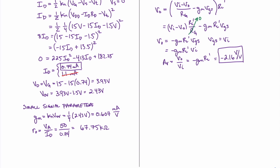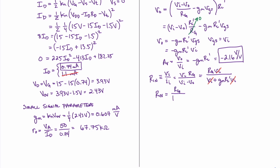All we have left is finding our input resistance and our maximum value of the input voltage. Input resistance can be defined as the input voltage divided by the input current. We already have an expression for our input current, so Rin equals VI divided by (VI minus Vout) divided by RG. Moving RG to the top and substituting our previous expression for Vout, we write RG times VI divided by (VI plus GM*RL prime times VI). The VI's cancel, resulting in Rin equals RG over (1 plus GM*RL prime). Substituting our values for RG, RL prime, and GM, we find that this equals 3.17 megaohms.